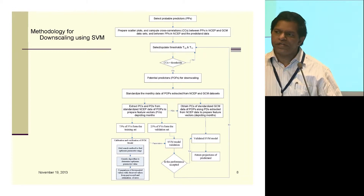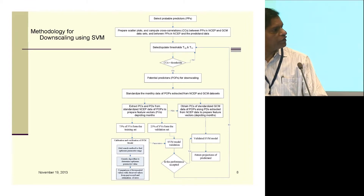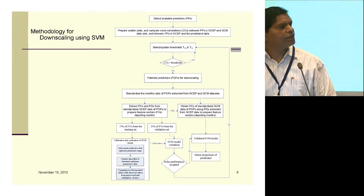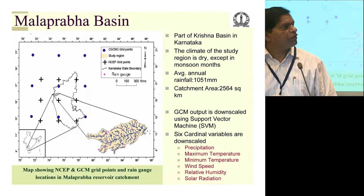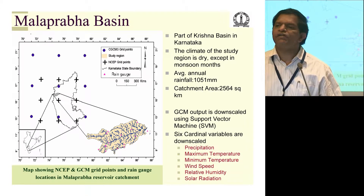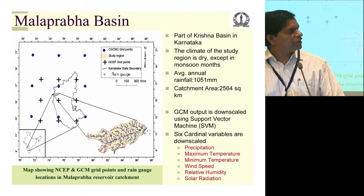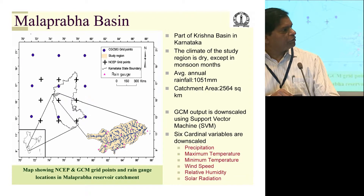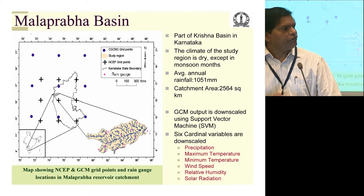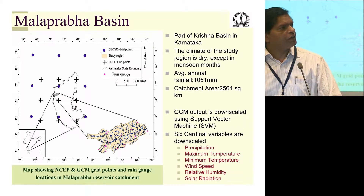In downscaling, we are not really using precipitation alone from the GCMs — we are using many causative variables. For the Malaprabha Basin, which is in the Krishna River Basin and is completely located in Karnataka, covering about 2,564 square kilometers, we used GCM output at grid points to obtain information on causative variables: precipitation, maximum temperature, minimum temperature, wind speed, relative humidity, and solar radiation.